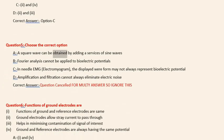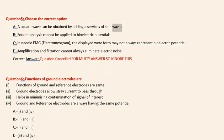Question 5: Choose the correct option. A. A square wave can be obtained by adding a series of sine waves. B. Fourier analysis cannot be applied to bioelectric potentials. C. In needle EMG (electromyogram), the displayed waveform may not always represent bioelectric potential. D. Amplification and filtration cannot always eliminate electric noise. Correct answer: Question cancelled for multi-answer, so ignore this.